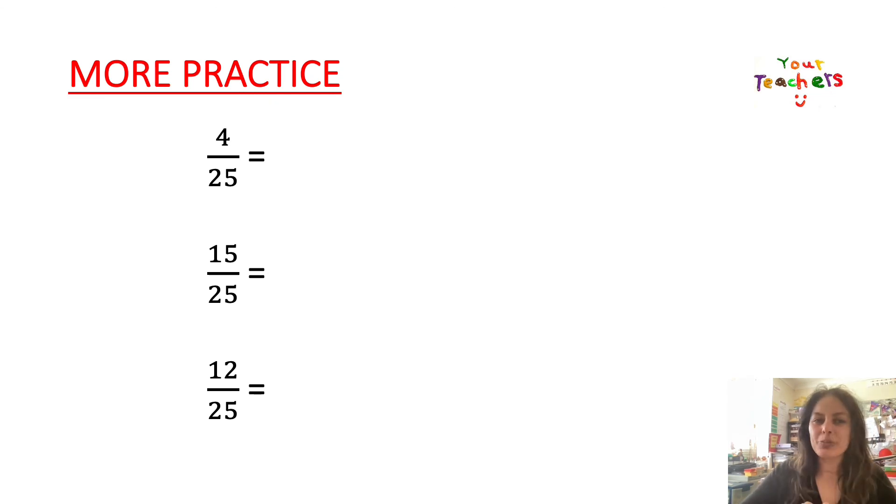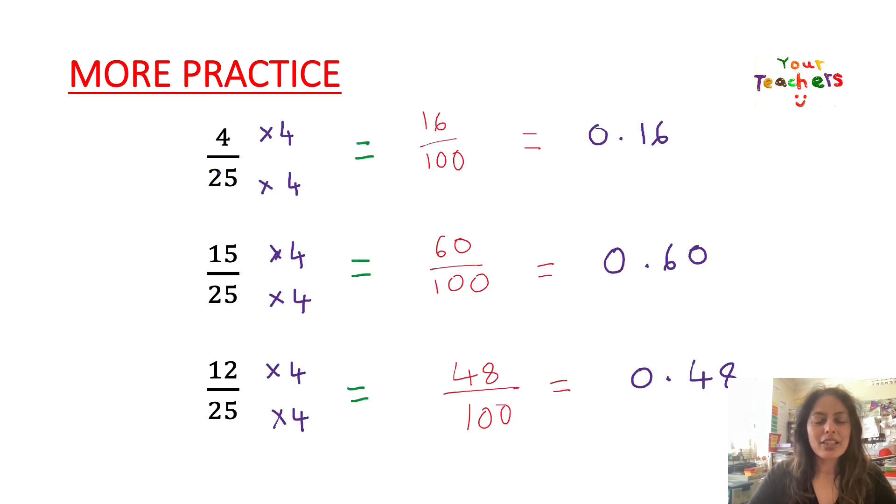If not, remember, we can always do it together. So 4 times 4 is 16. 25 times 4 is 100. So 25 times 4, your forever rule, make sure you remember this forever. 25 times 4 is always going to give us 100.